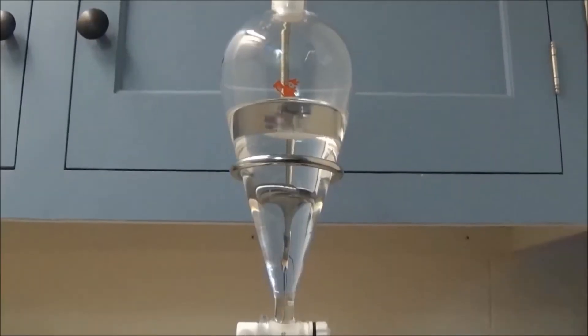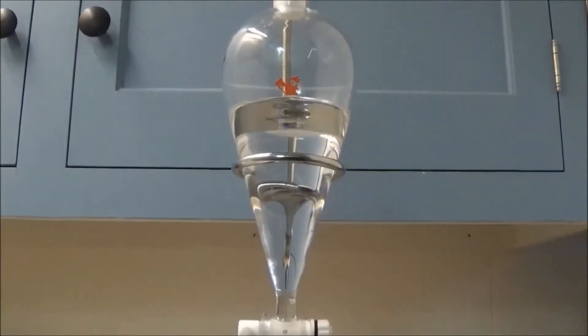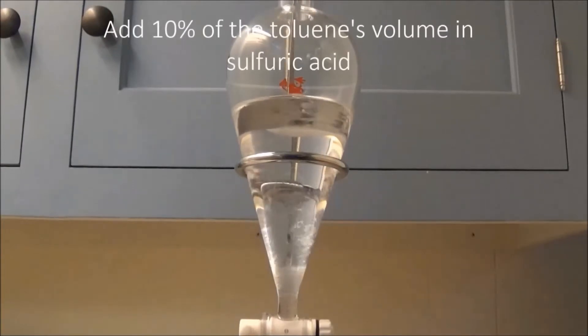I first measured out 250 milliliters of the toluene. To this, I added 25 milliliters of concentrated sulfuric acid.